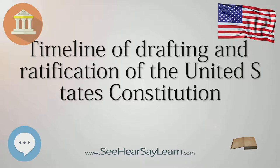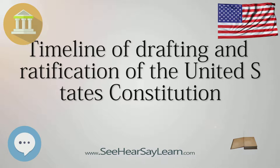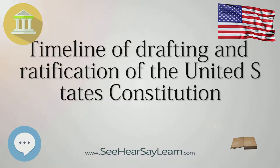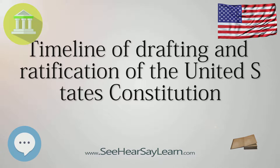1785. March 25: Maryland-Virginia Conference Convenes. Initially scheduled to assemble in Alexandria, Virginia on March 21, delegates representing the states of Maryland and Virginia gather at Mount Vernon, the Fairfax County home of George Washington, to address navigational rights in the states' common waterways.